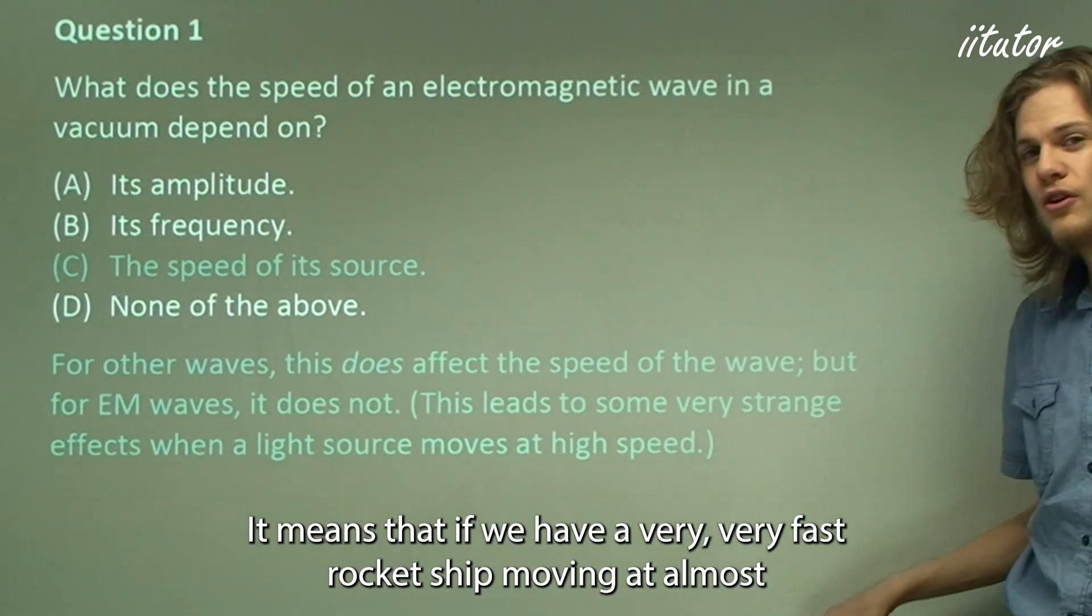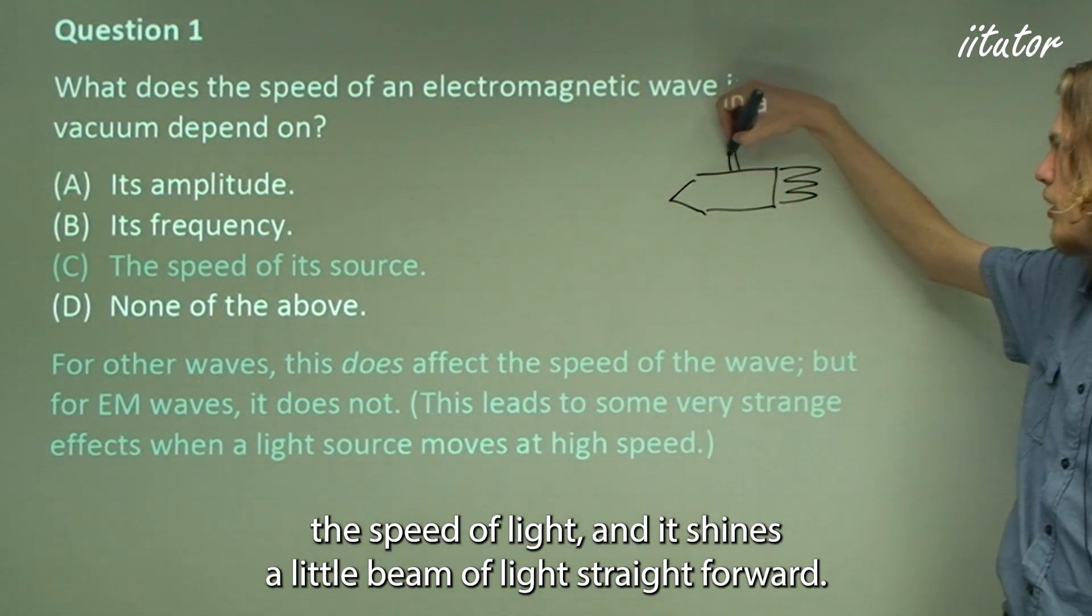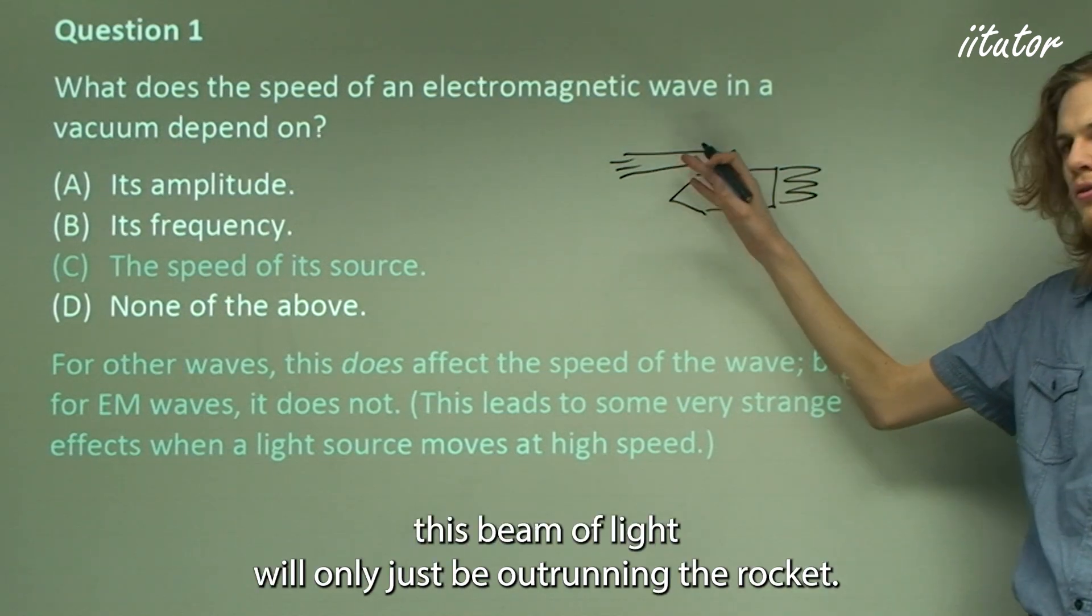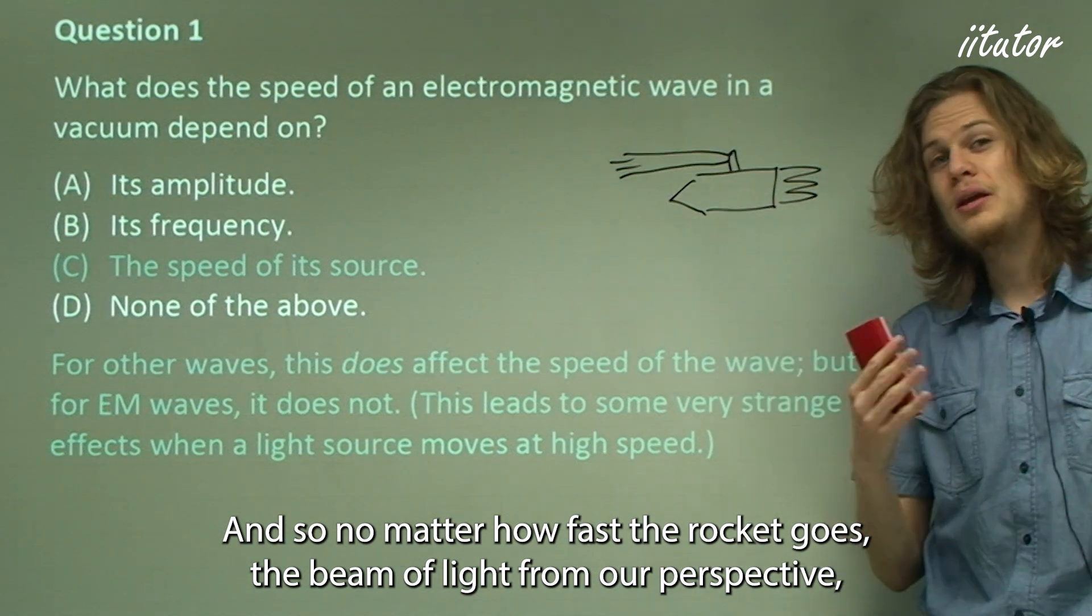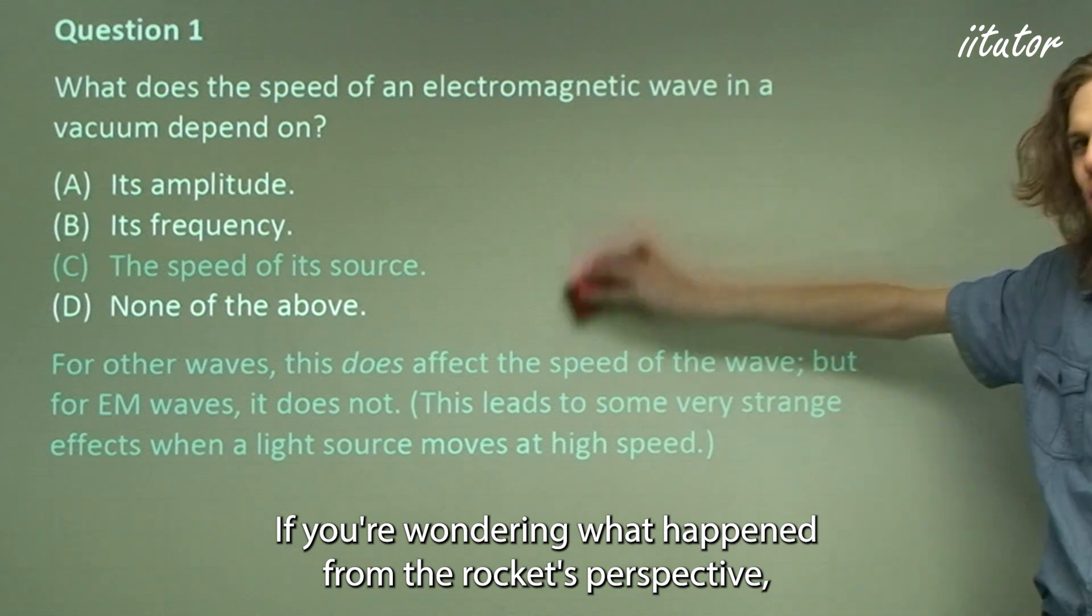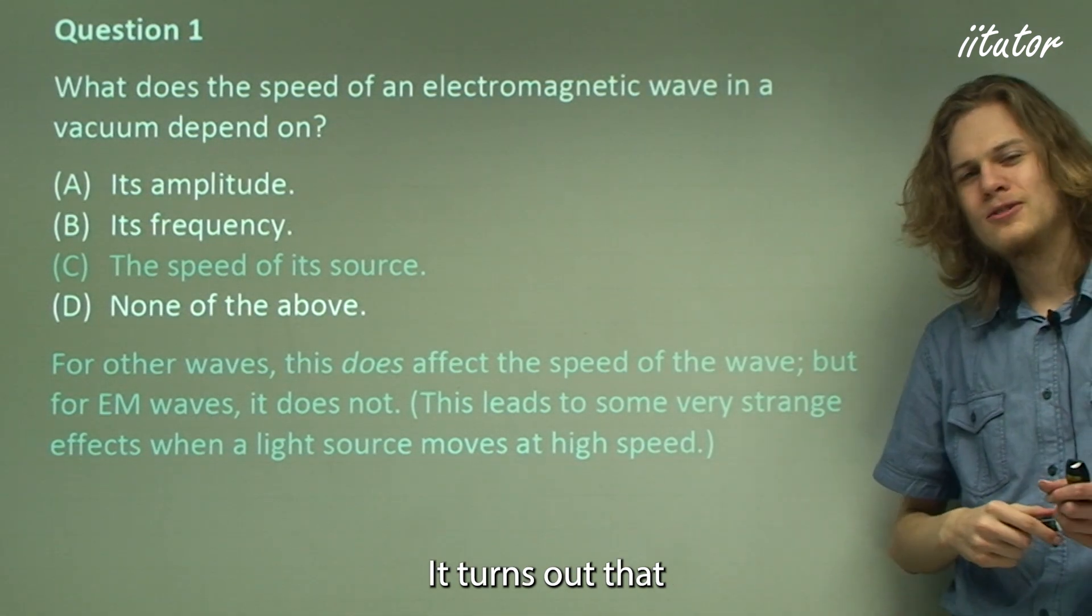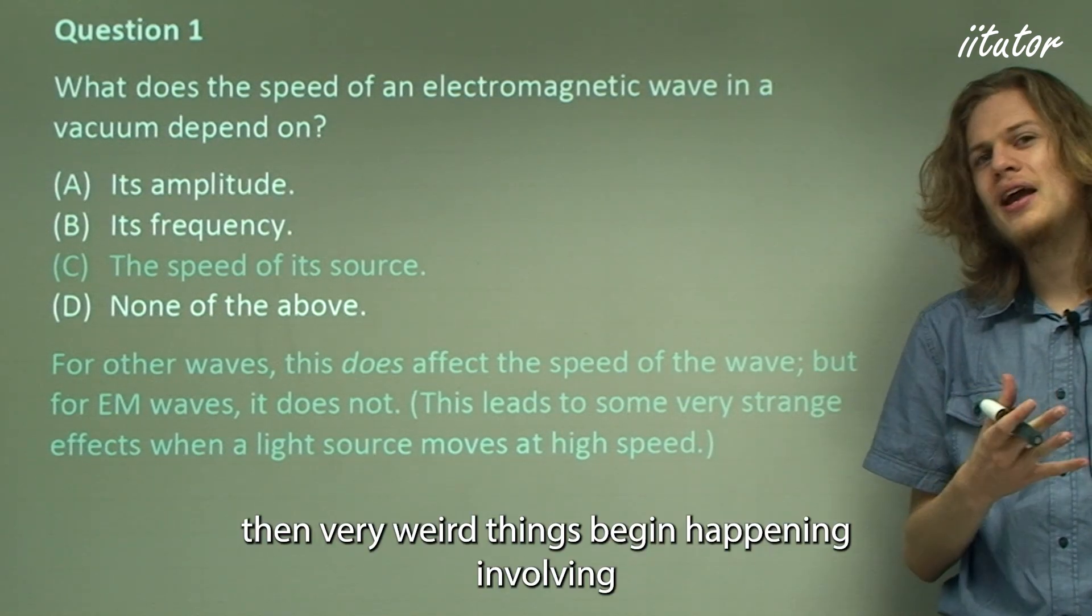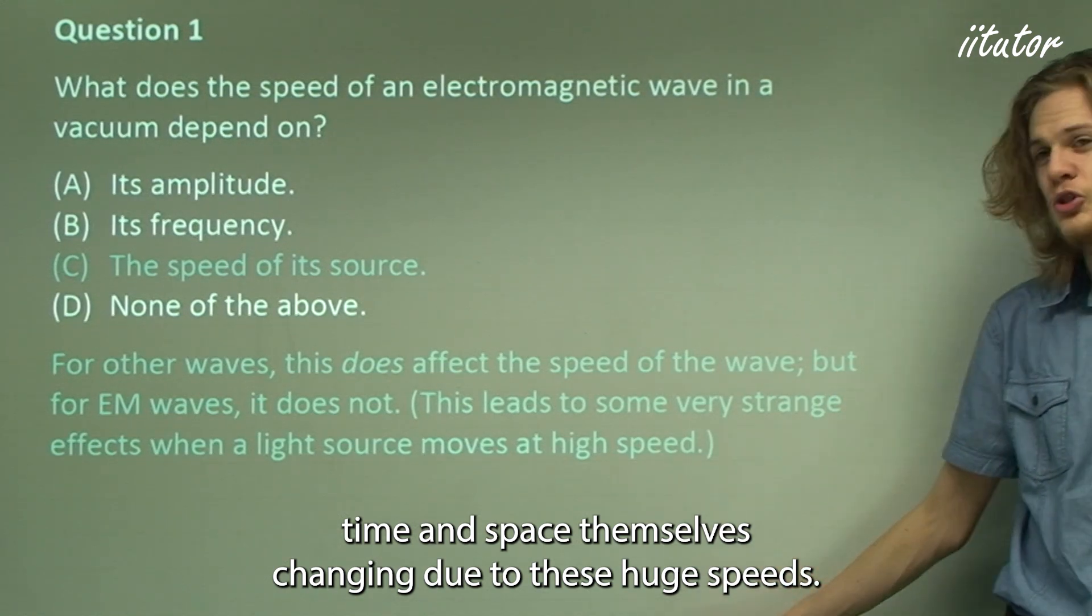It means that if we have a very fast rocket ship moving at almost the speed of light and it shines a little beam of light straight forward, then from our point of view this beam of light will only just be outrunning the rocket. And so no matter how fast the rocket goes, the beam of light from our perspective will always move at the same speed. If you're wondering what happens from the rocket's perspective, I'm afraid you'll have to wait for that answer. It turns out that if we're looking at things moving close to the speed of light, then very weird things begin happening involving time and space themselves changing due to these huge speeds.